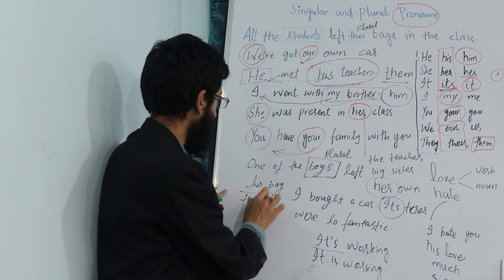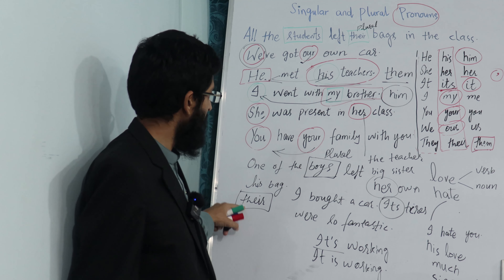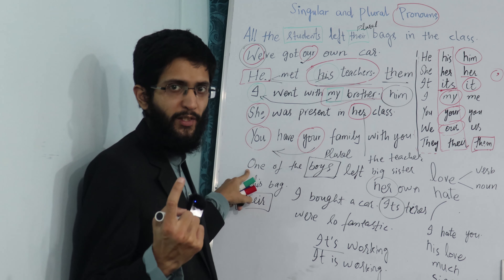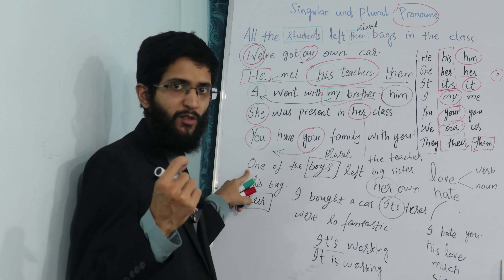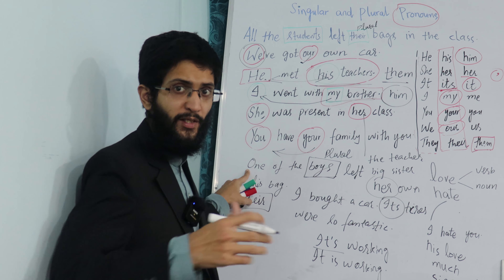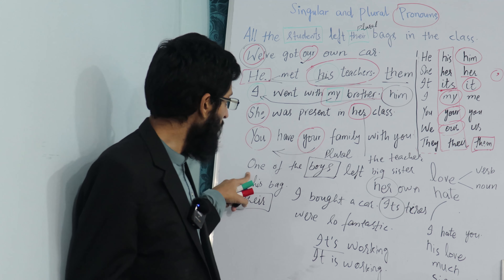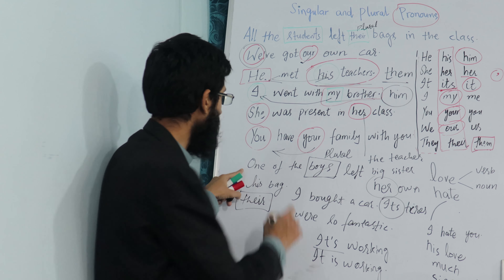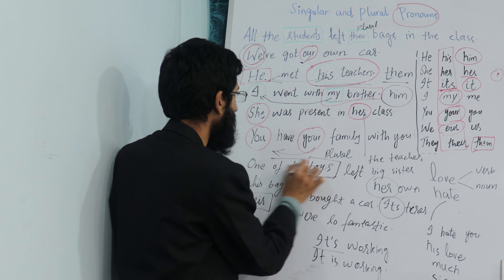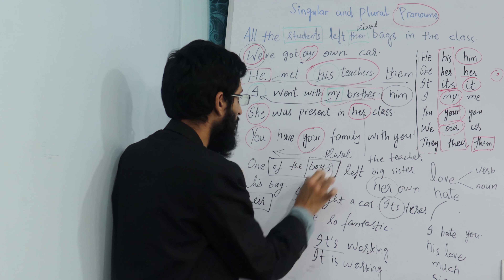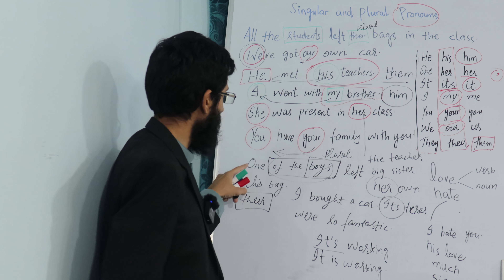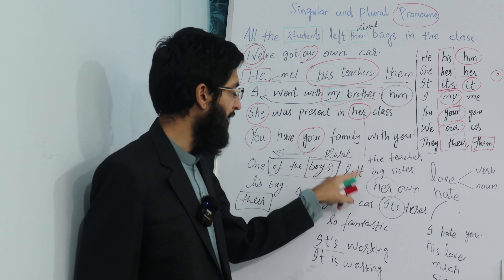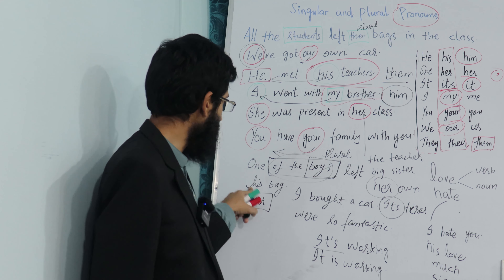The reason is we are talking about only one boy — one boy out of many. One boy left his bag. So one boy who was one among all, he was one of the boys. 'One of the boys left his bag.' This is a singular reference, so the pronoun is 'his,' not 'their.'